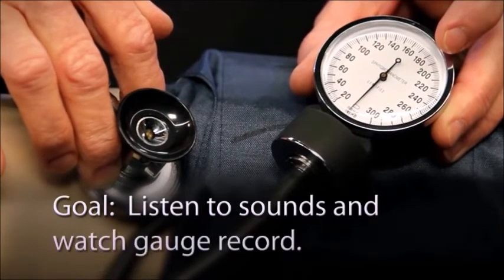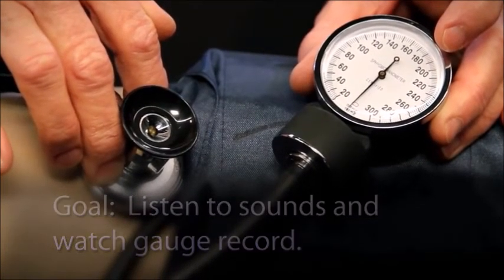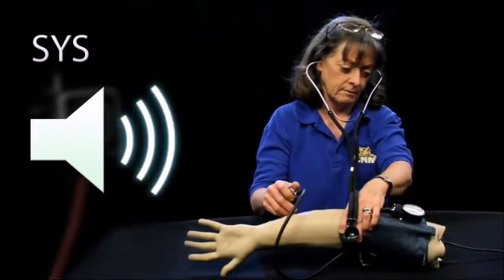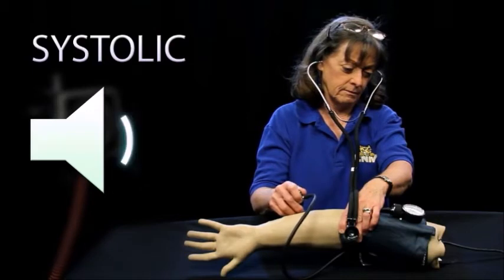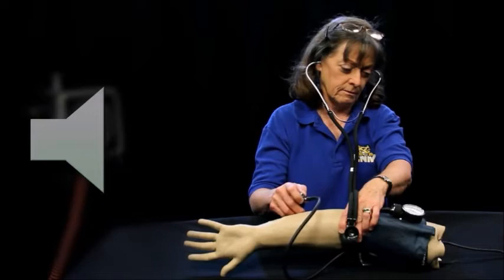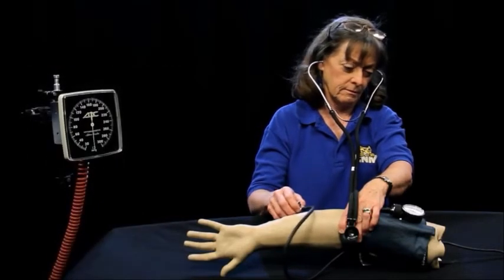Practice is to coordinate what you hear with what you see on the gauge. You will listen for the first sound which is the systolic blood pressure. Next, listen for when the sound stops. This is the diastolic blood pressure. Then write down your measurement.